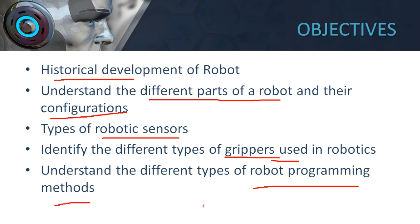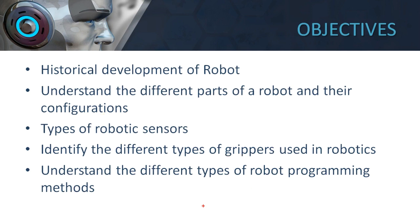These are the main objectives of this particular video lecture series. If you want to understand robot technology, you need to understand how exactly the robot started, why it was created, the historical development of the robot, and then you need to understand the different parts of a robot. Without understanding the parts of a robot, the configuration of the robots cannot be understood, along with the different types of sensors used by a robot.